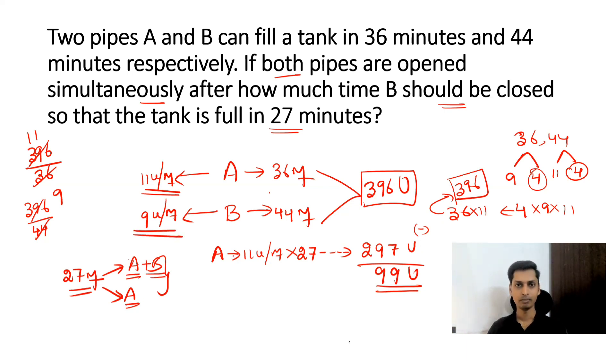We know capacity of pipe B, that is efficiency of pipe B is 9 units per minute. So in how many minutes will pipe B fill 99 units? 99 by 9, which is 11 minutes. Pipe B have worked for 11 minutes. Now we can take it in this way: pipe A and B have worked for 11 minutes, then pipe B was closed, then pipe A completed the remaining work. Now answer for this question is after 11 minutes, pipe B closed.